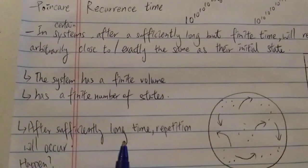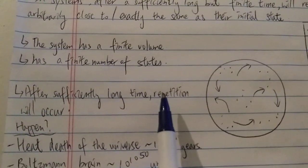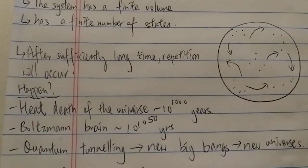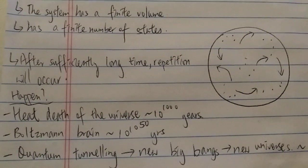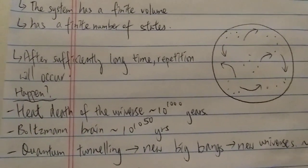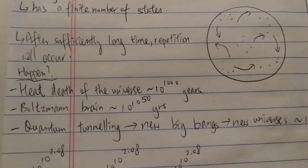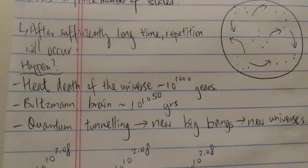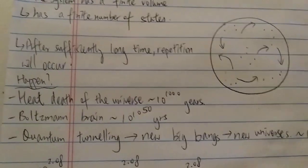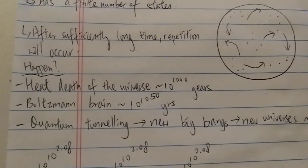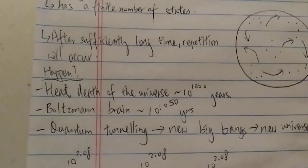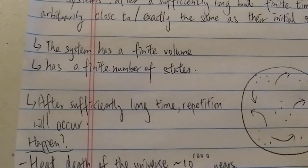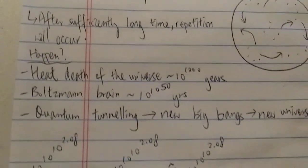Basically, Poincaré recurrence is saying that after a sufficiently long time, repetition will occur. A simple example: if you draw a card from a deck of cards enough times, eventually you'll draw the same card again — say a three — and it's guaranteed that repetition will happen, not just once but many times, given enough time. The rule is you must have a finite number of cards; you cannot have an infinite amount.